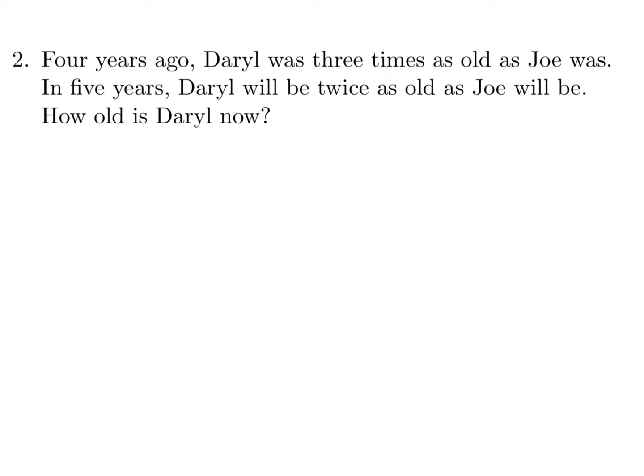Four years ago, Daryl was three times as old as Joe was. In five years, Daryl would be twice as old as Joe will be. How old is Daryl now? So we have to set up the math here. So four years ago, D minus 4 was equal to three times J minus 4, where D and J represent Daryl and Joe's age. So this is my first equation.